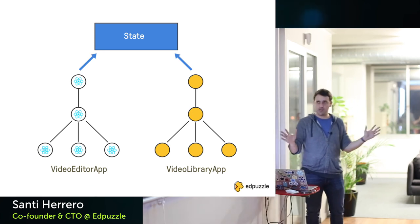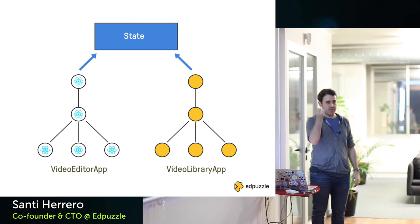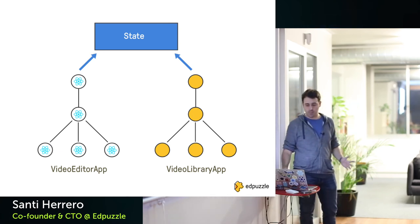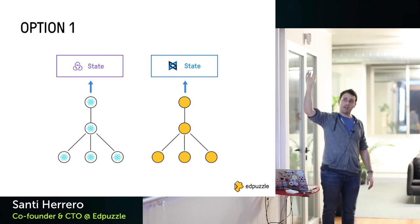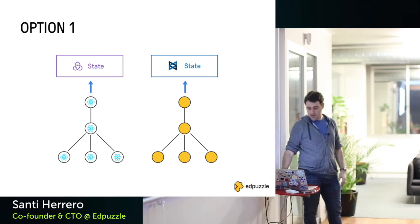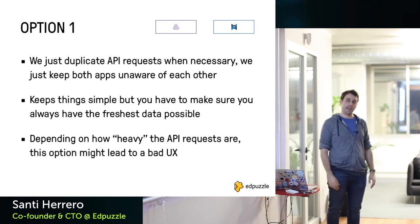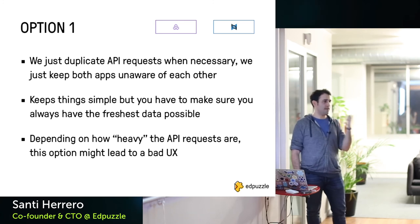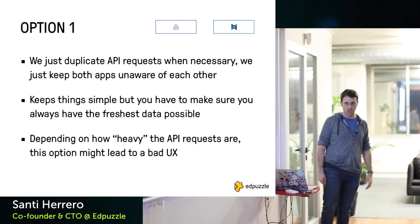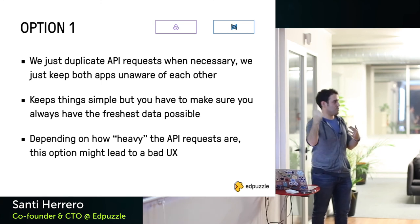What happens when you have two sub-applications sharing the same state — for example, the video editor and the video library both share the video object — and because of roadmap constraints you migrate one to React/Redux but can't migrate the other yet? Option one: duplicate the state — both the Backbone part and the Redux part make their own API request, keeping both apps unaware of each other. For simple, fast API requests this is ideal — maybe for a month you have that duplication until the other app is migrated.